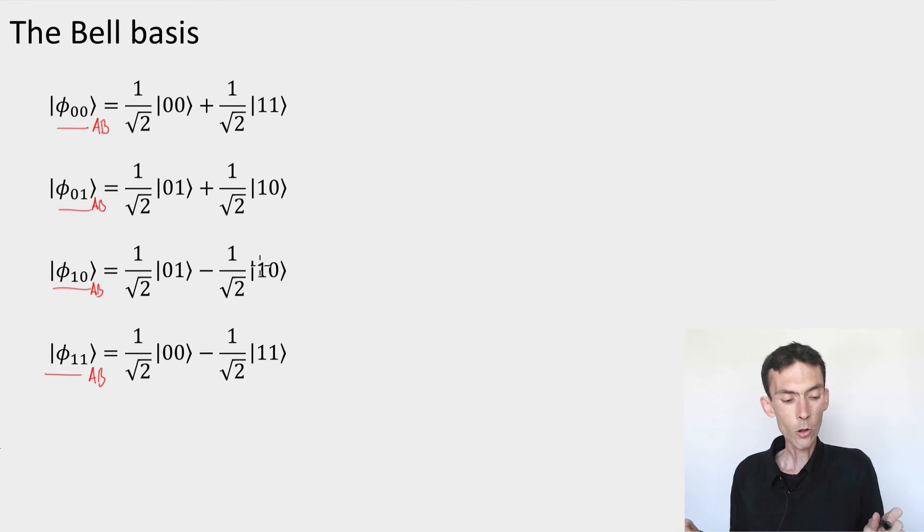Any two of these states are orthogonal. Now, the dimension of the space is 4, so they form an orthonormal basis. It's different basis than the ones we're used to because it's not made of product states. It's made of entangled states. But it's a valid basis of C2 tensor C2. That's the first property.